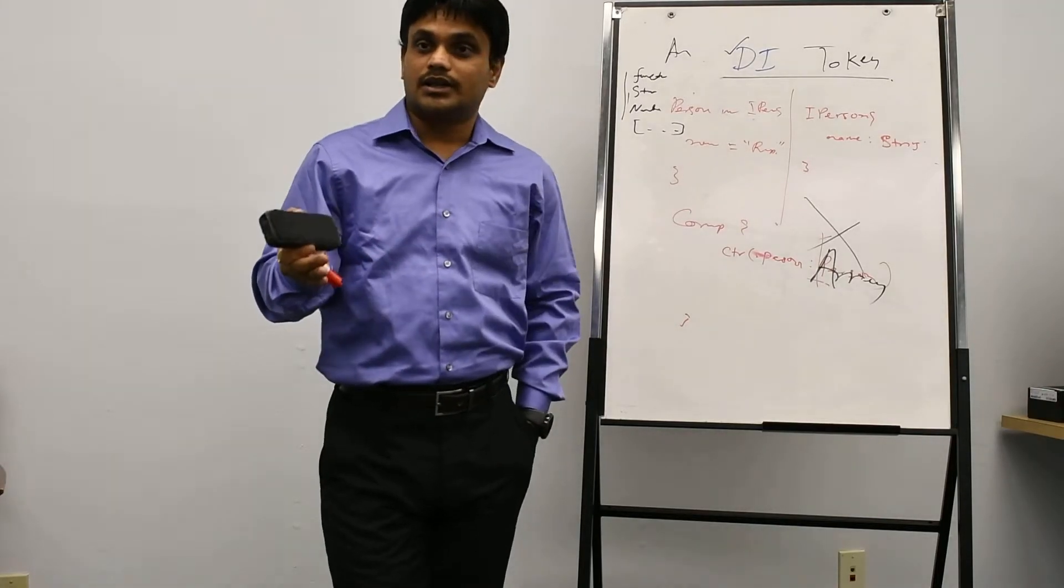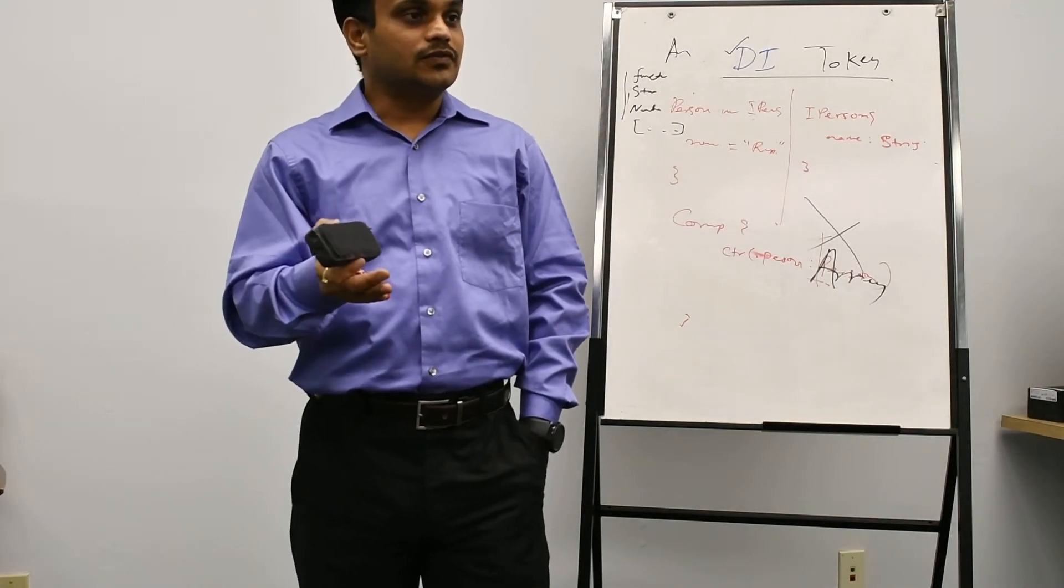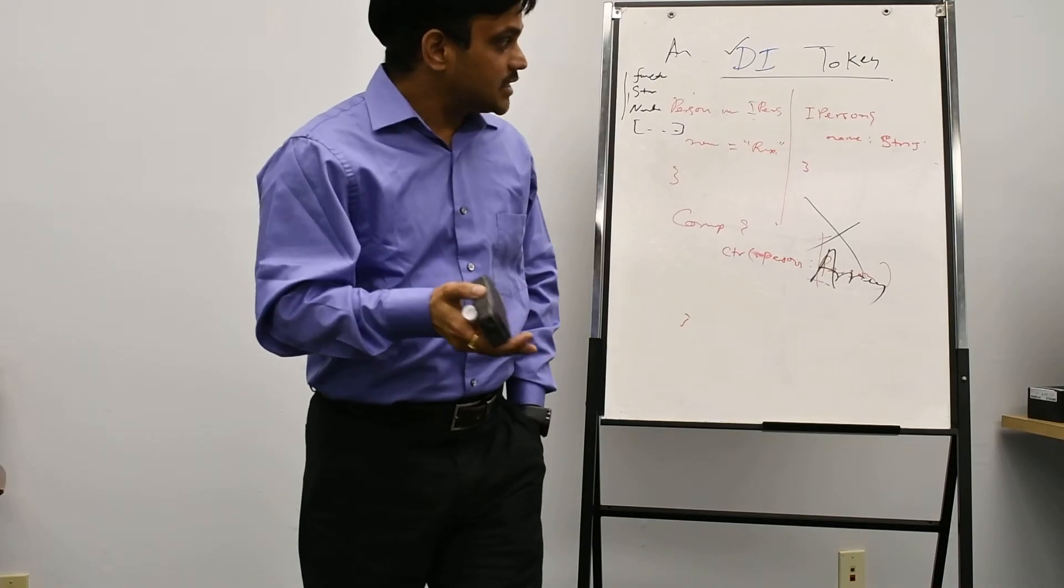So those are important things. In the next one we will figure it out. Dependency injection token. What are the helpful things to figure it out. Those are the stuff which are not in the runtime.